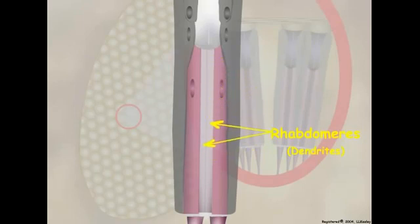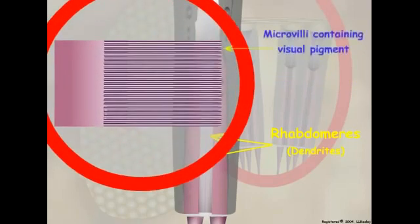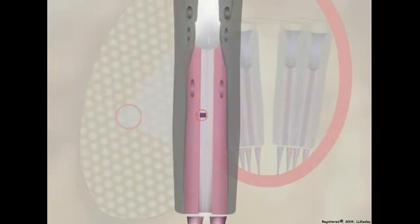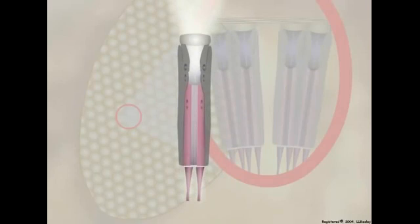Together, all of the individual rhabdomeres are referred to as the rhabdom. Rhabdomeres consist of parallel microvilli containing light-detecting visual pigment molecules embedded into their plasma membranes. Light entering the cornea and cone of an ommatidium is focused on and detected by visual pigments embedded in the rhabdomere membranes of the retinula cells.